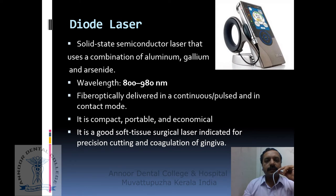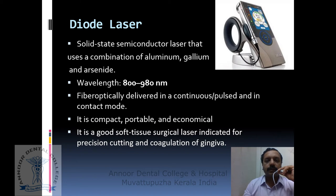Second is the diode laser, a solid state semiconductor laser that uses a combination of aluminum, gallium, and arsenide as the active medium. The wavelength is 800 to 980 nanometers. It is fiberoptically delivered in continuous or pulse mode and commonly used in contact with tissues. It has the advantage of being compact, portable, and economical. It is only absorbed by two structures; hence soft tissue surgery can be safely performed in close proximity to hard dental tissues. Diode laser light is well absorbed by pigmented tissue and is a good soft tissue surgical laser indicated for precision cutting and coagulation.